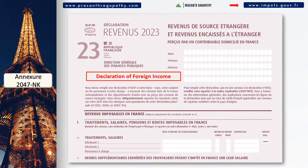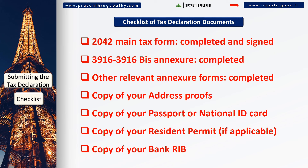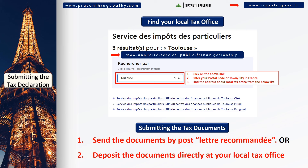When you have completed the tax forms, you can start preparing the total package to be sent to your local tax office. This includes all the relevant tax forms, address proofs, your identity proofs, and the bank RIB. Do not staple any documents, but you can use paper clips to organize them and add sticky notes at the top with short explanations. You can find the address of your local tax office using the official income tax office's directory as explained on the screen.